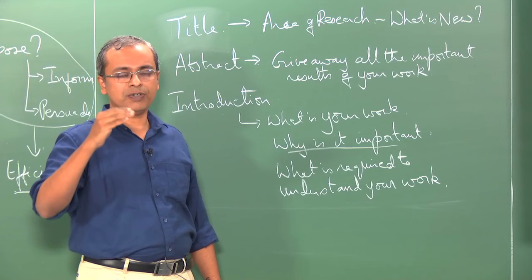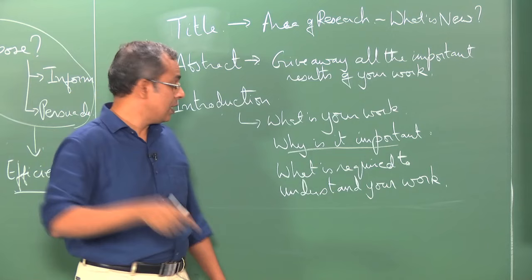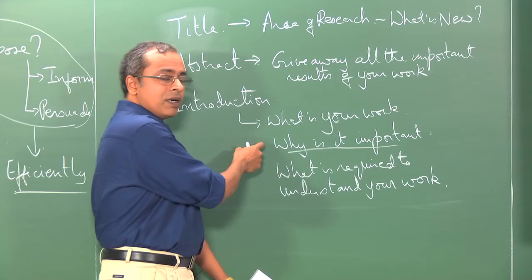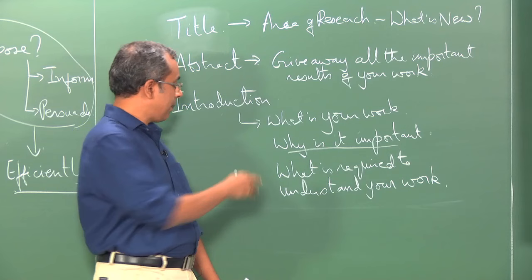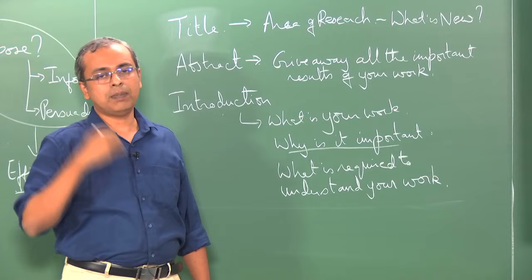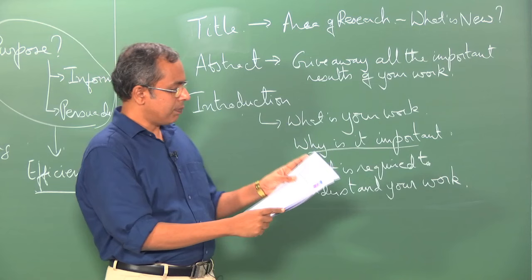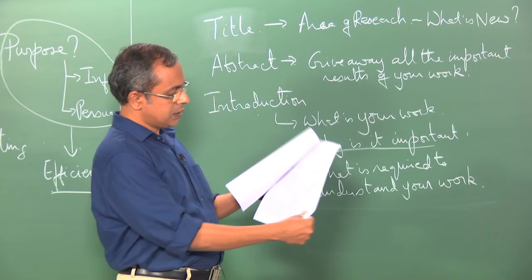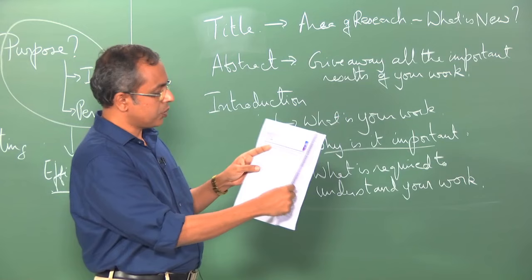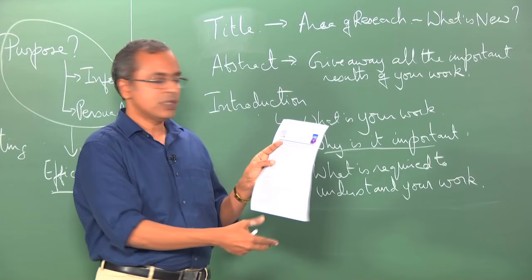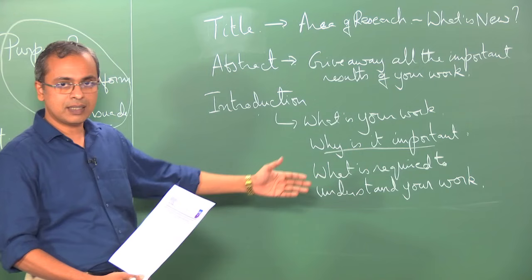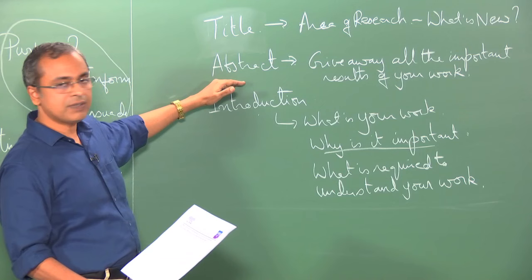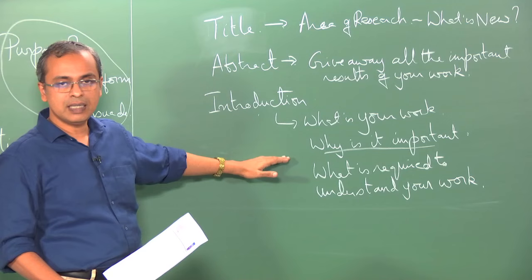To publish, you have to first convince yourselves and convince the reviewers that you have done something new. The 'why is it important' section is where you highlight how your work is new, comparing it with what is already in the literature. At the end of the paper there will be a list of references — all articles you are referring to in your introduction and experimental details — so that you can convey how your work links up with other published work.